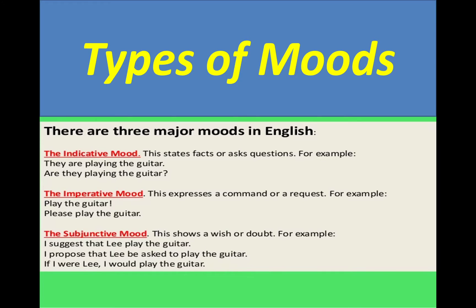Now let's see how many moods there are. Primarily, there are three kinds. Number one is Indicative mood, number two is Imperative mood, and number three is Subjunctive mood.